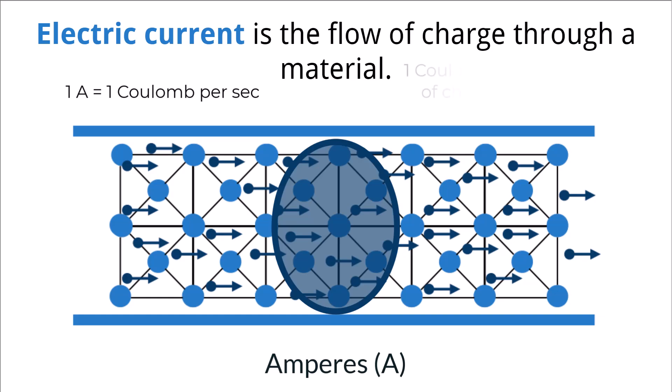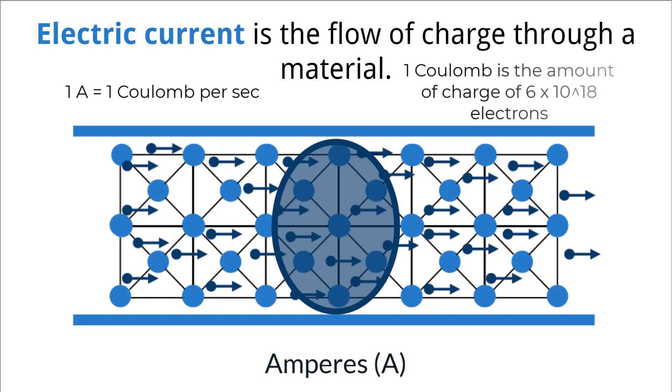A coulomb is the amount of charge of about 6 times 10 to the 18th power of electrons. Therefore, current is measuring how many electrons are moving through a material over an amount of time. The greater the number of electrons, the more current the material has and the greater the amount of energy.